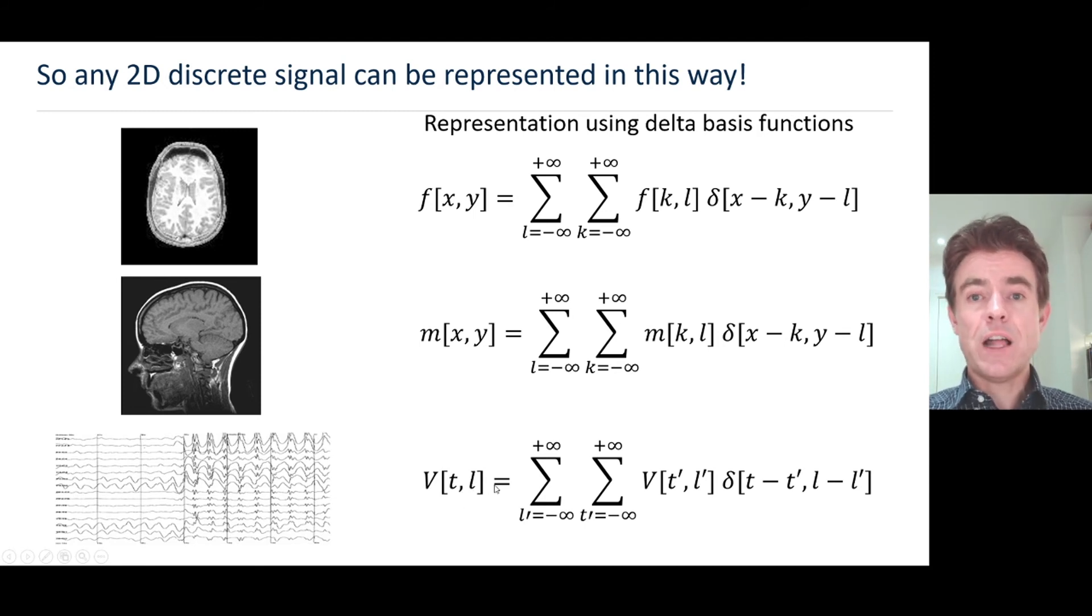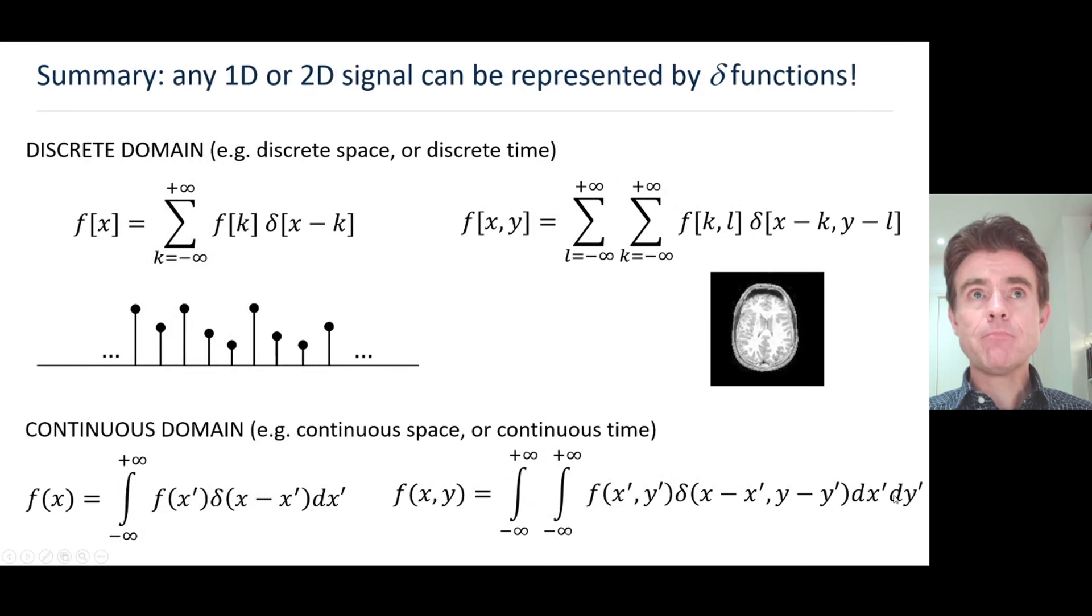In summary, we've got any 1D or 2D signal being represented by summations of delta functions. On the left-hand side the 1D case which we saw at length, and on the right-hand side the 2D case now dealing with delta of x and y shifted. At the bottom now I've given you a little preview of where this is going, because sometimes it's going to be convenient to deal with continuous functions rather than discrete ones.